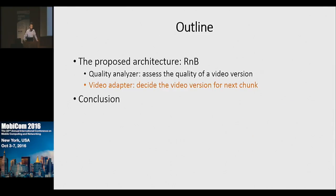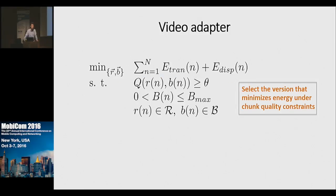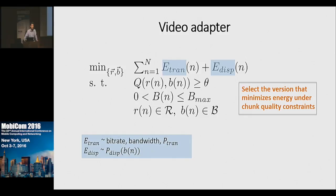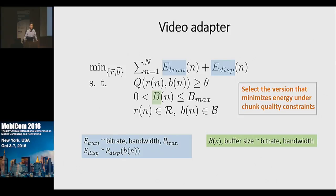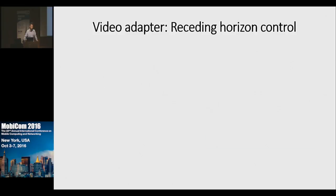Now I'll introduce the video adapter. We formulate the adaptation as an optimization problem where we minimize the total device energy for transmitting an entire video with N chunks, subject to constraints on the quality of individual chunks. The total energy includes both transfer energy and display energy, and the constraints include both buffer and PSNR constraints. Since energy and buffer can be derived from bandwidth and bitrate, if we know the future bandwidth for all N chunks, we could solve this offline. But since future channel information is not available, we need an online algorithm.